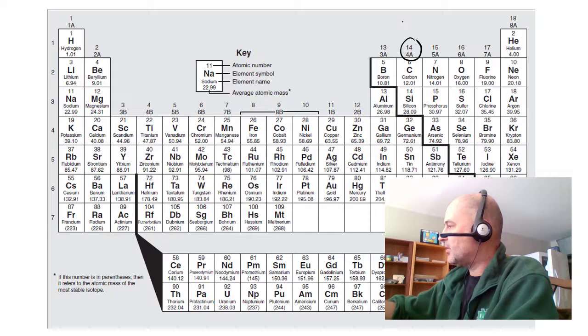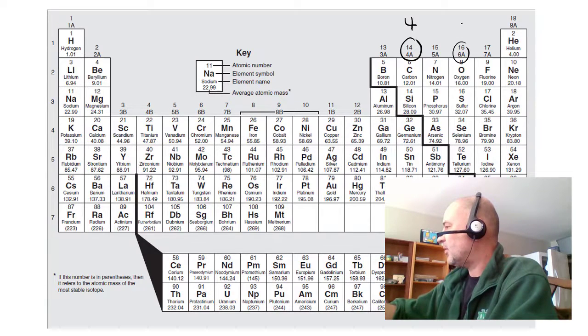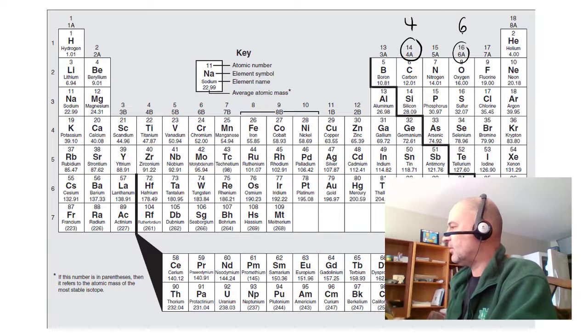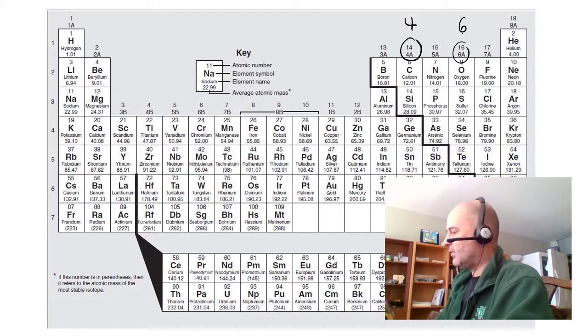Carbon is in group four. That means it has four valence electrons. Oxygen is in group six. That means it has six valence electrons. Each oxygen has six valence electrons.